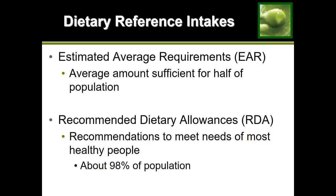The reason we develop the EAR is to use it as a stepping stone to figure out the RDA, or Recommended Dietary Allowance, which covers nearly all of the population. We find the average of the population's needs and then essentially double it to get an amount that sufficiently covers a large population. The RDA is the one we want to follow.